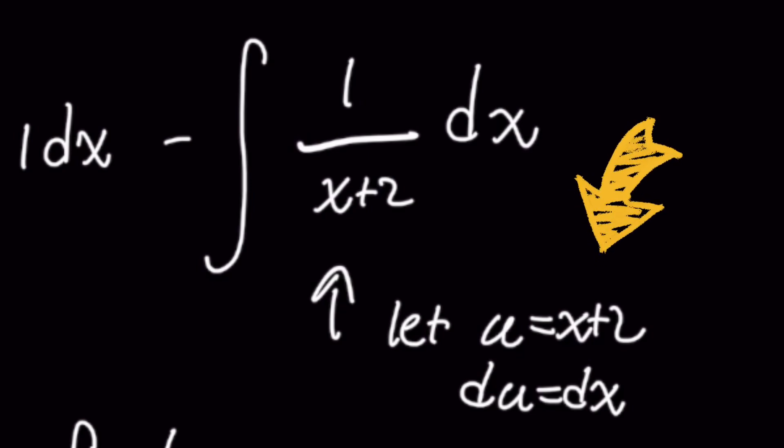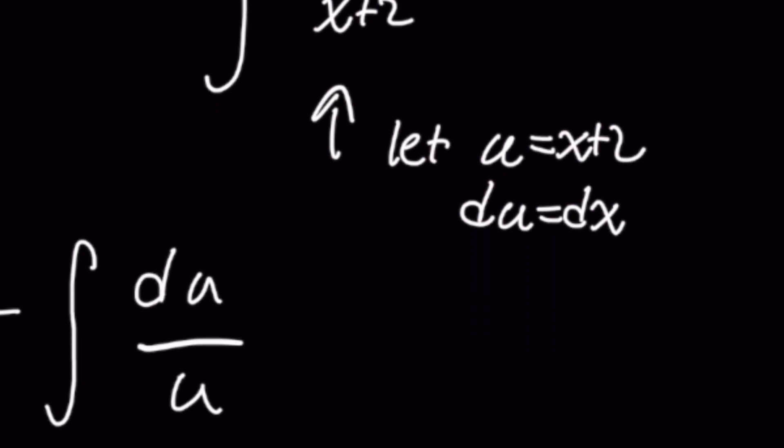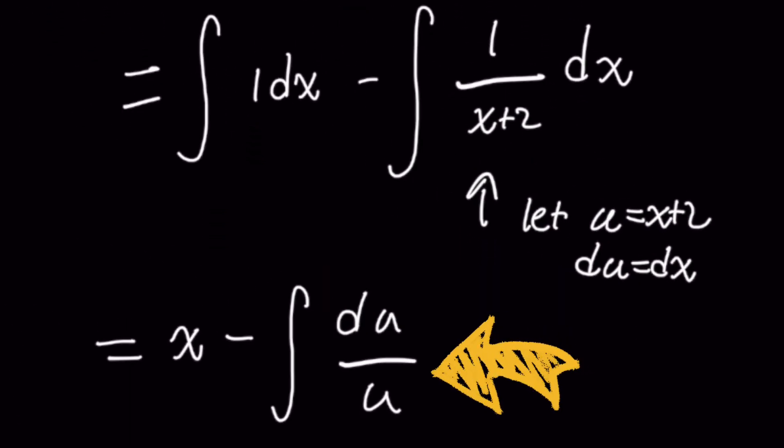And so if we let the variable u be the denominator, which is x plus 2, and you differentiate both sides with respect to the variable you see on each side, you would get the integral of du over u here because with our u substitution, this became a lot simpler, right?